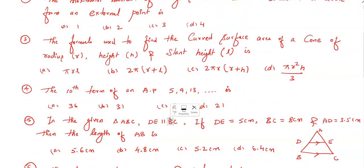Question number three: the formula used to find the curved surface area of a cone. This is a key point: curved surface area of a cone of radius r, height h, and slant height l is: option a) πrl, option b) 2π(r + l), option c) 2πr(r + h), option d) πr²h/3.